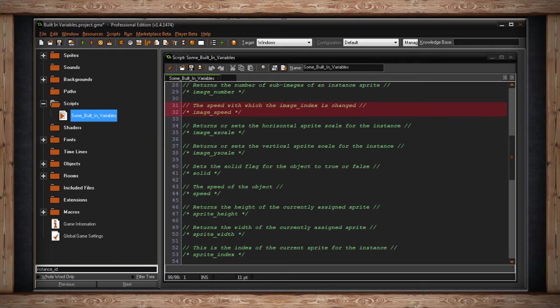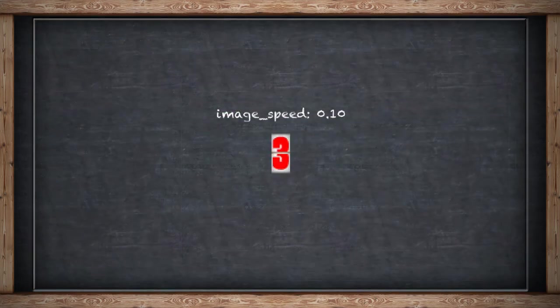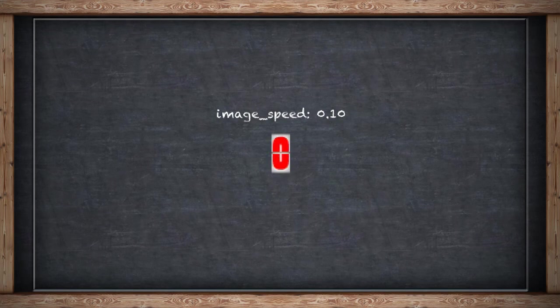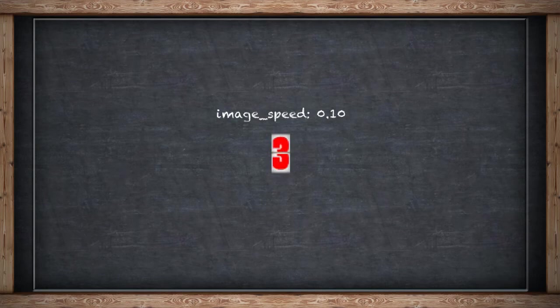Image speed sets the speed of your animation — the rate at which the image index is changed. The value denotes how many sub-images will be displayed per step. An image speed of 1 means one sub-image per step; an image speed of 2 means two sub-images per step. To slow down your animation, use decimal numbers: a value of 0.5 shows one sub-image every second step, making your animation take twice as long to loop. Think of it like percentages — 1 is 100% speed, 0.5 is 50%, 0.25 is 25%, and so on, whatever speed you need.